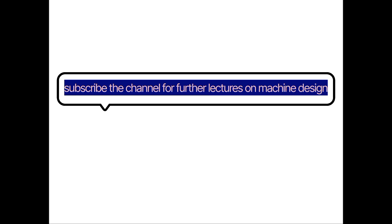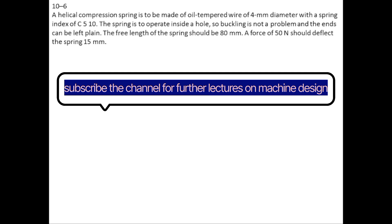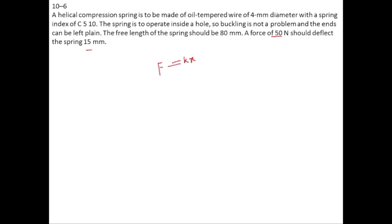In today's tutorial we will do problem 10.6. A helical compression spring is used which is oil tempered, with wire diameter of 4 mm and C equal to 10. It operates inside a hole to avoid buckling. The spring free length is 18 mm and a 15 Newton force deflects the spring by 15 mm. Since force and deflection are given, using F = kx, k = 15/15 = 3.333 N/mm.